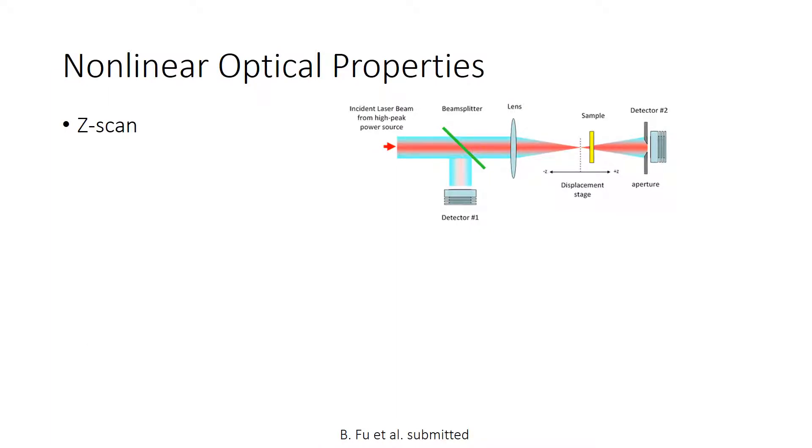The nonlinear optical properties can be tested by the Z-scan technique. The technique consists of focusing a laser beam with a lens and scanning a sample across the focus position.